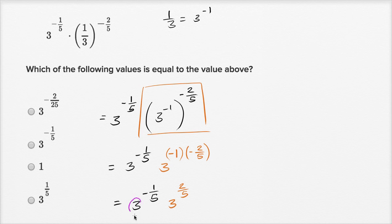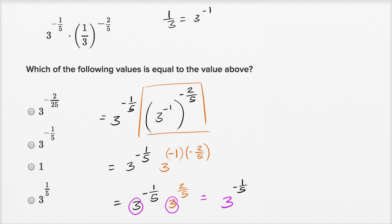We have the product of three to the negative one-fifth times three to the positive two-fifths. This is going to be equal to three to the negative one-fifth plus two-fifths power. If you have the same base, the product of that base raised to one exponent and that same base raised to another exponent is the same as that base raised to the sum of those exponents. Classic exponent property — I encourage you to go on Khan Academy if this is looking foreign or you need some review.